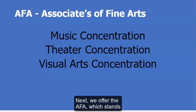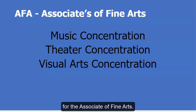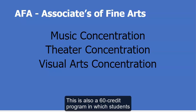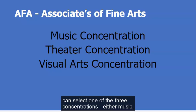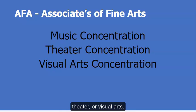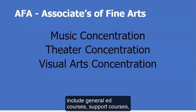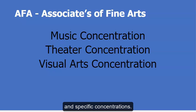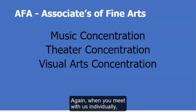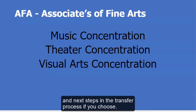Next, we offer the AFA — Associate of Fine Arts — also a 60-credit program in which students can select one of three concentrations: music, theater, or visual arts. This program includes general ed courses, support courses, and specific concentration courses. When we meet with you individually, we will help you set up your plan of study and next steps in the transfer process if you choose.